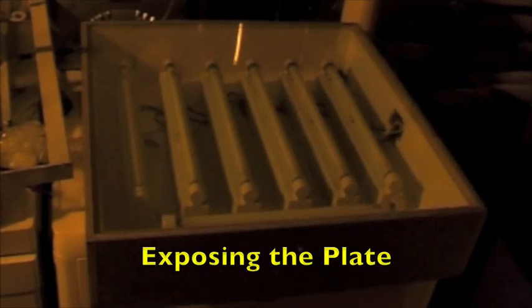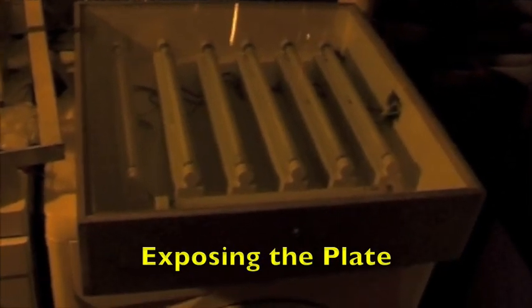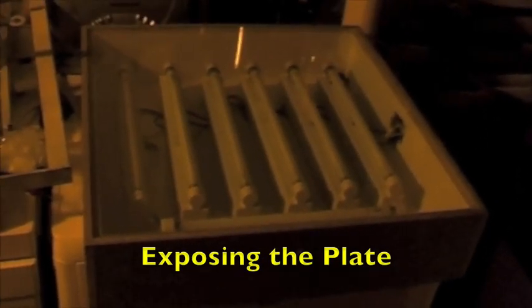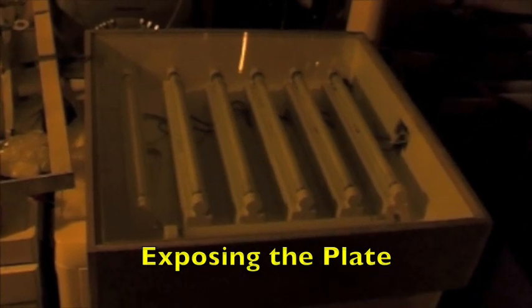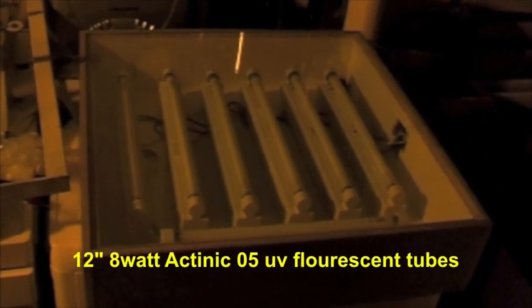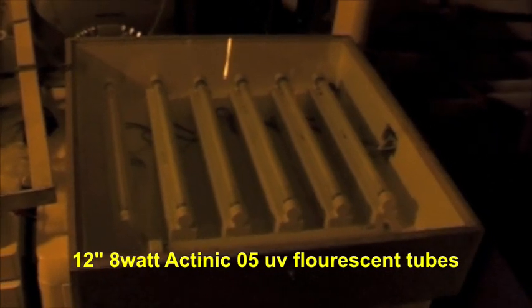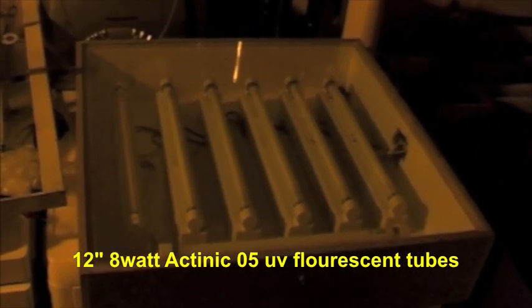This is the ultraviolet light box. It's just an ordinary box with a plate glass top and five ultraviolet tubes. They're called actinic tubes and you get them from any electrical supplier but they'll probably have to order them.